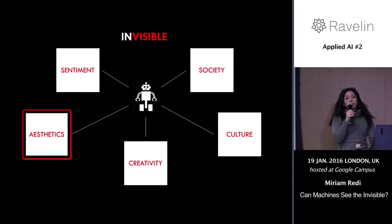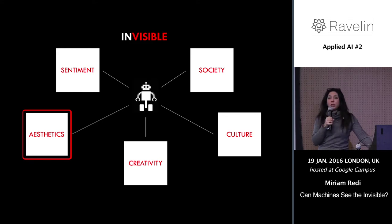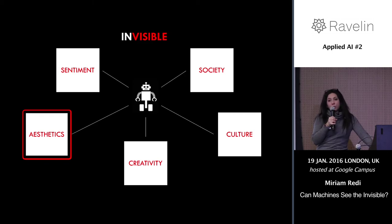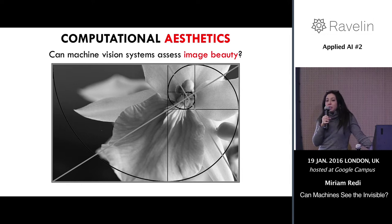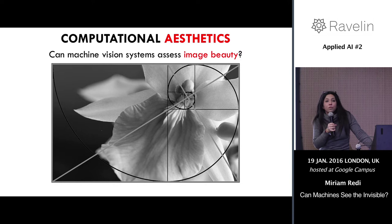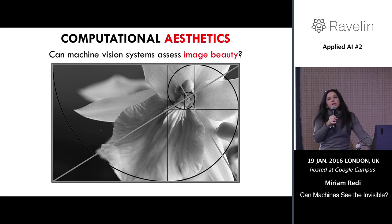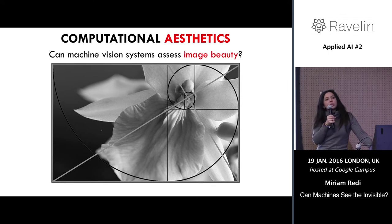One of the branches of subjective machine vision that has been widely explored by myself and my colleagues is called computational aesthetics. What we do in computational aesthetics is build computer vision systems that can automatically assess the beauty and photographic quality of images and videos. We do so by teaching a machine how to distinguish between good and bad photographs according to some encoded photographic rules.